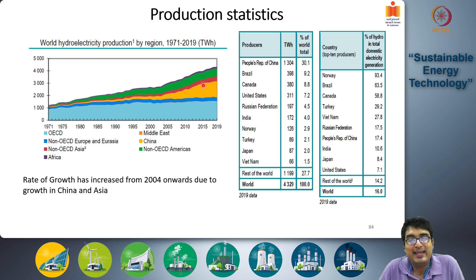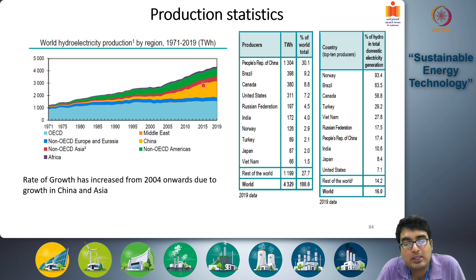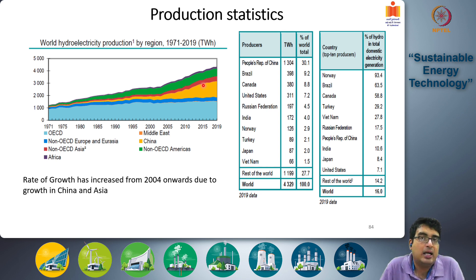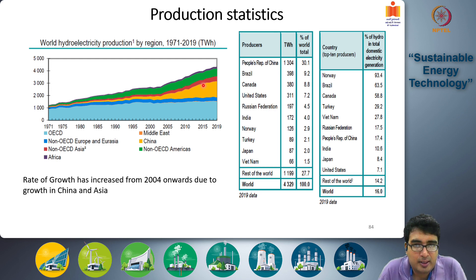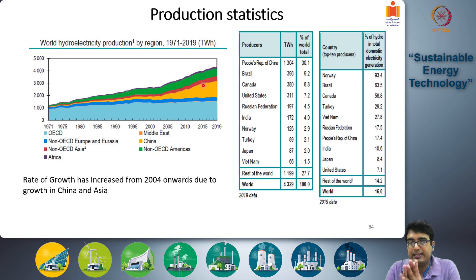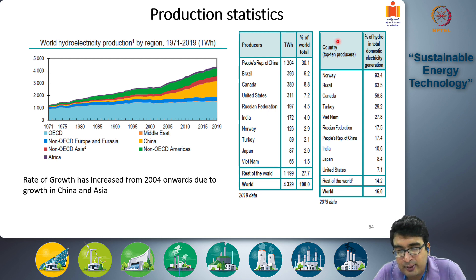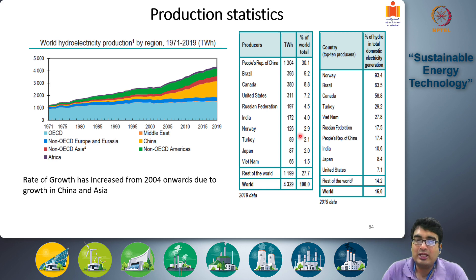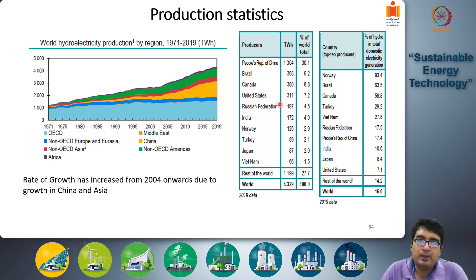So the entire growth from 1000 TWh to 4000 TWh has occurred in China, other Asian countries, and Latin American countries. This is also reflected in the country-wise distribution: this is 2019 data of the total amount of hydroelectric power being produced in different countries.